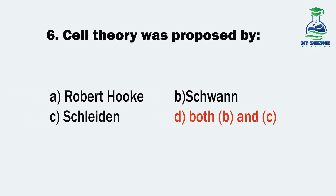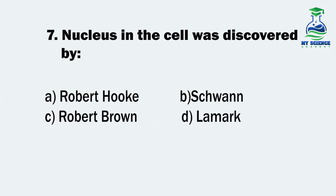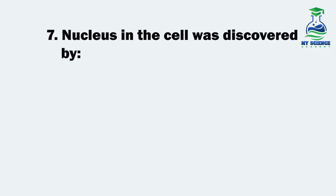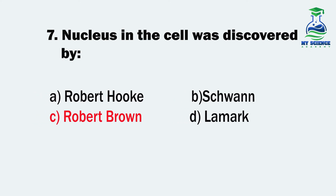Question 7. Nucleus in the cell was discovered by: A. Robert Hooke, B. Schwann, C. Robert Brown, or D. Lamarck. Let us see what is the correct option. And the correct option is C. Robert Brown.